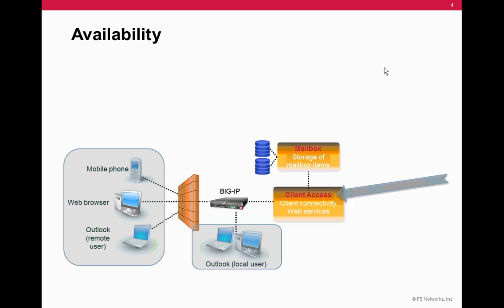This means high availability for client access is critical. If CAS servers are not available, users don't get their email.